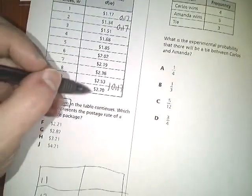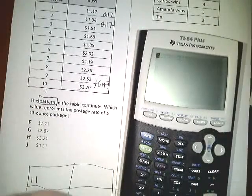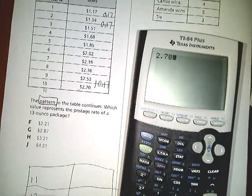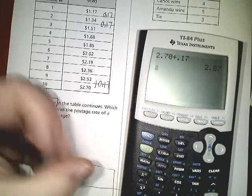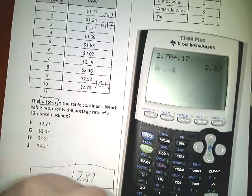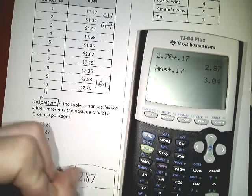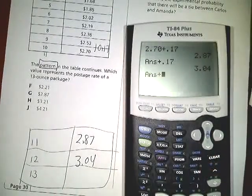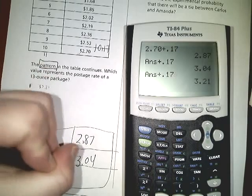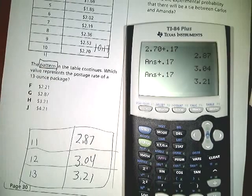So I'll add 17 more cents to 270 to give me what it would be at 11. 2.87. And then I'd add 17 more cents. 3.04. Then I'd add 17 more cents and get 3.21.